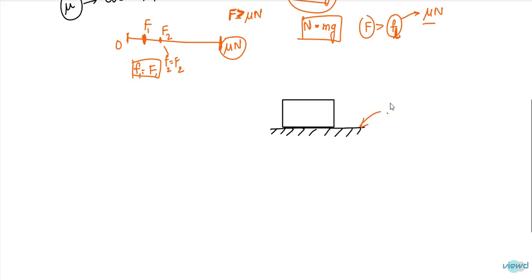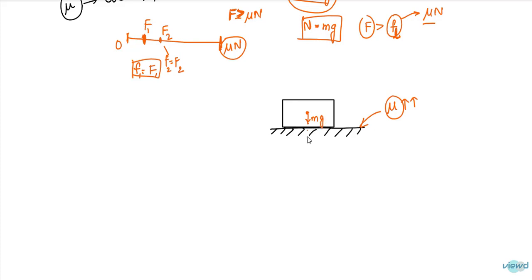Now consider the same case where mu is very very high — so high that the body is not going to slide with a normal applicable force. Here, the center of gravity has weight mg acting downward, normal reaction N acting upward, and applied force F. Let the height of force application be h and the width of the body be a. There is also a friction force acting.